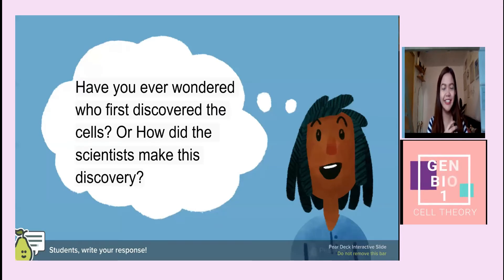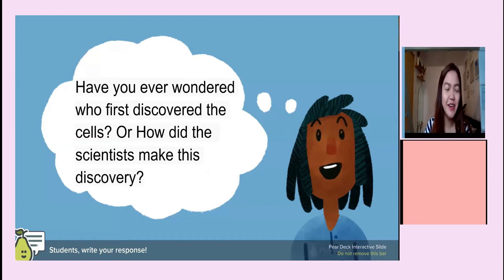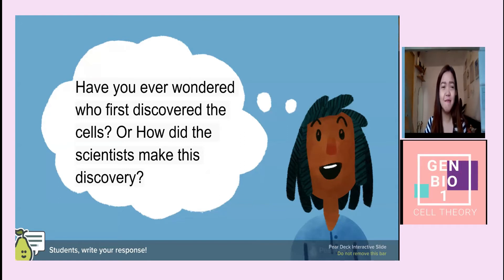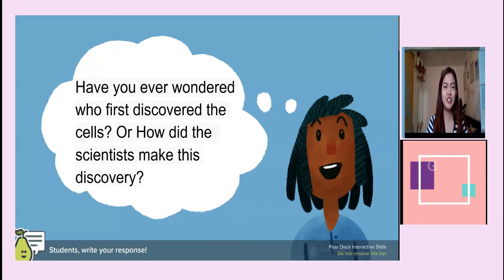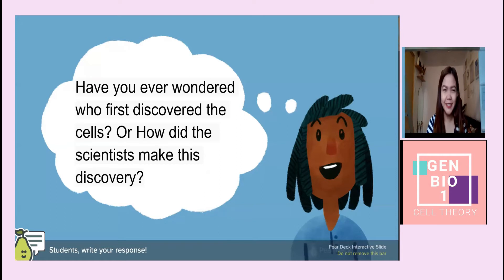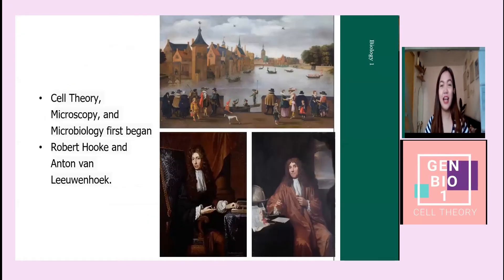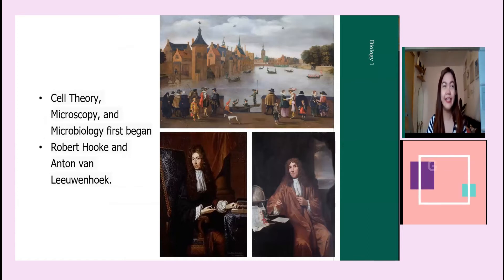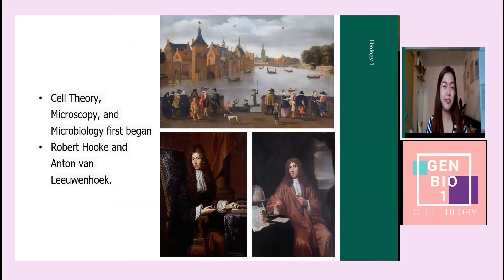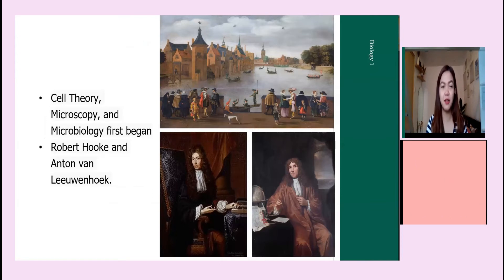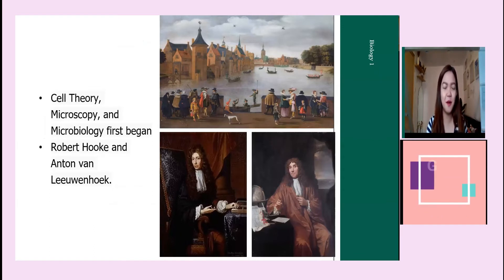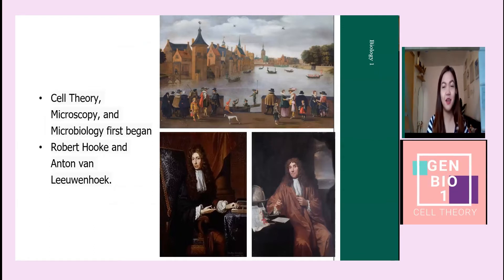Before we really start the lesson, here are two common questions students wonder about: where did cells come from, and how were they discovered? To answer that, we go back to the late 16th century to the early 17th century, because that is when cell theory, microscopy, and microbiology really boomed — largely thanks to two prominent scientists: Robert Hooke and Anton van Leeuwenhoek.